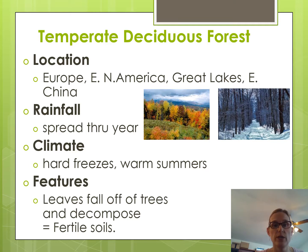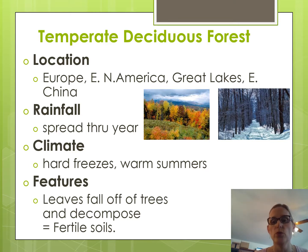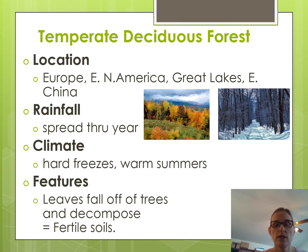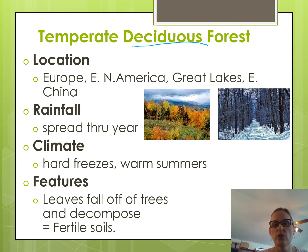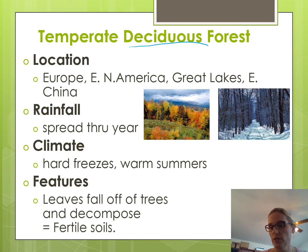The first biome you need to know is the temperate deciduous forest. It is found in Europe, eastern North America — think of the East Coast, like New York, the Carolinas, or Virginia. Deciduous means the leaves fall off the trees. It's also found around the Great Lakes and in eastern China.